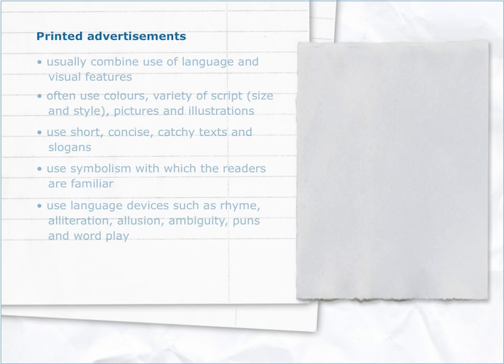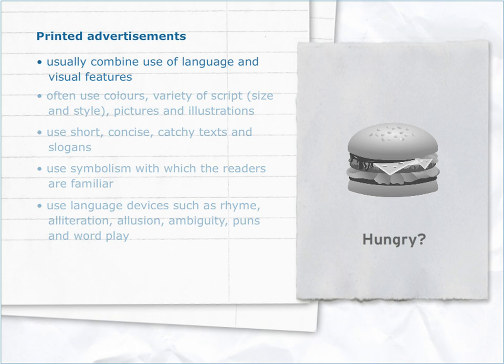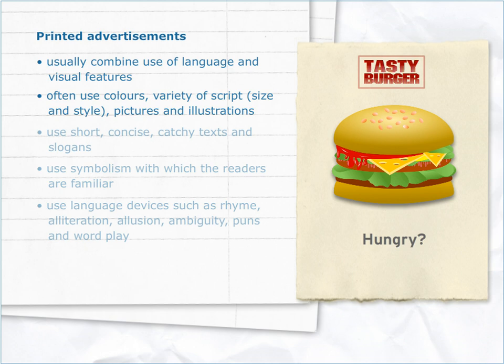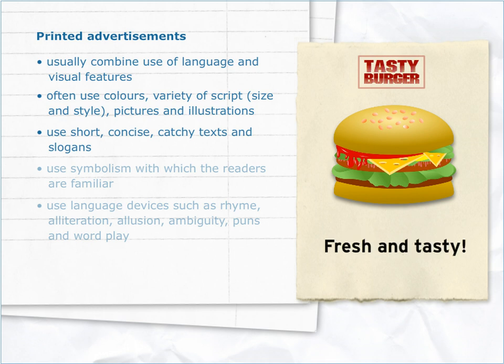Printed advertisements usually combine use of language and visual features. They often use colours, variety of script, size and style, pictures and illustrations. They use short, concise, catchy texts and slogans. They also use symbolism with which the readers are familiar.